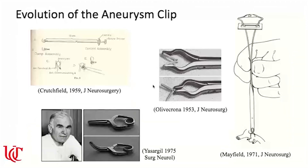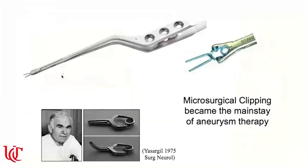As technology evolved, so did the clips. Early clamps included the Crutchfield clamp and forceps-based designs. Dr. Mayfield published his own clip in 1971. But the winner of the technology race was Dr. Yasargil, whose clip design used forceps that, when squeezed, open the clip via a fulcrum mechanism — allowing the surgeon to place and reposition the clip until achieving perfect placement. This made microsurgical clipping the mainstay of aneurysm therapy.